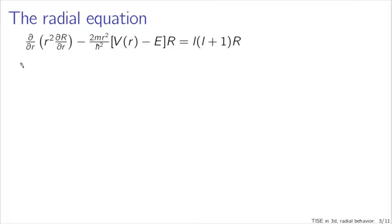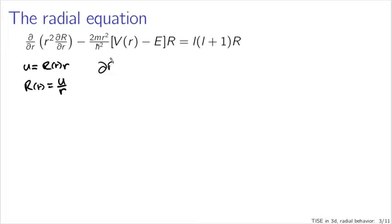We can simplify this equation by rewriting it in terms of some new function u, given by capital R(r) multiplied by r. Put another way, the function R(r) is given by u divided by r. So u is a function of r, and if we make these substitutions in the original equation, the form of the equation simplifies slightly. For instance, I've got terms like the partial derivative of R with respect to r. If I write this in terms of u, it's the partial derivative with respect to r of u over r — and this doesn't look much simpler yet, but you'll see what happens in a moment.